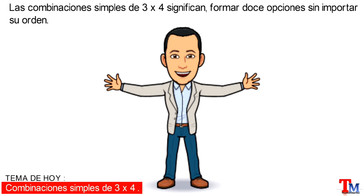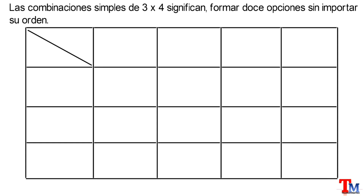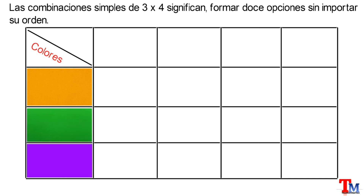A continuación, veamos un ejemplo utilizando una tabla de doble entrada, donde en la primera columna tenemos una variedad de colores, y en la primera fila tenemos una variedad de figuras planas.